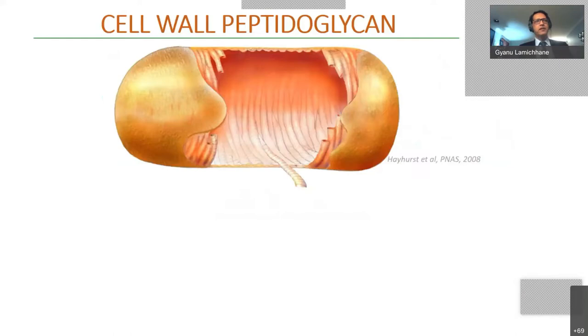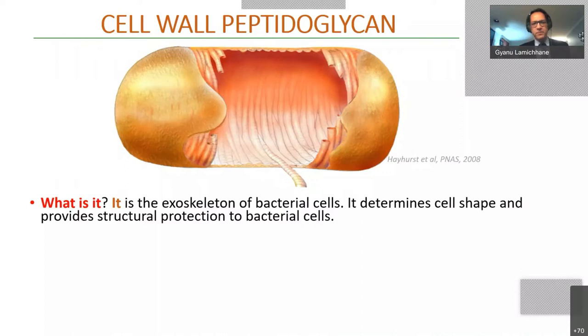Going back to the cell wall of bacteria: I'm showing you a bacterial rod here — Mycobacterium tuberculosis looks like this — and I'm showing you its cell wall. A component of the cell wall is called the peptidoglycan. It is the exoskeleton of bacterial cells. All bacterial cells have it — it determines the cell shape and provides structural protection. For a round-shaped cocci, the peptidoglycan is the structural component that determines that shape. For Helicobacter pylori, the spiral shape is determined by the chemical composition and the way the peptidoglycan is connected.